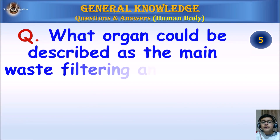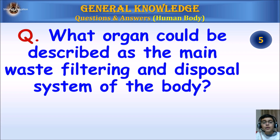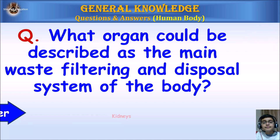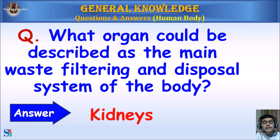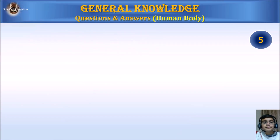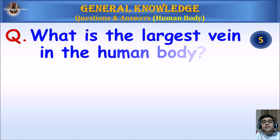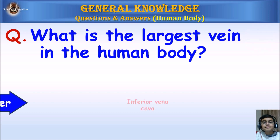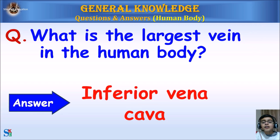What organ could be described as the main waste filtering and disposal system of the body? Answer: Kidneys. What is the largest vein in the human body? Answer: Inferior vena cava.